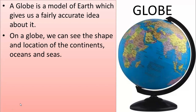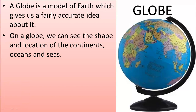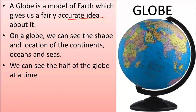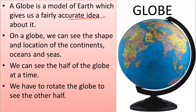Now let's see what is a globe. A globe is a model of earth which gives a fairly accurate idea about the earth. On a globe we can see the shape and location of the continents and seas. These are the continents, and the blue color shows oceans and seas. At a time we can see only a half of the globe.